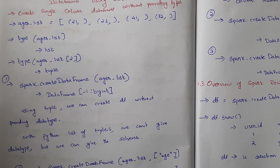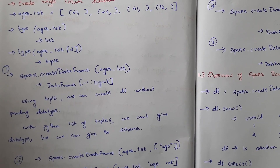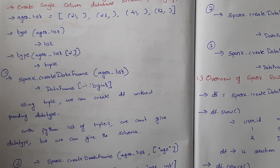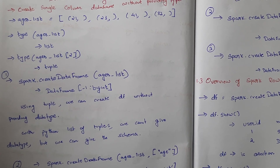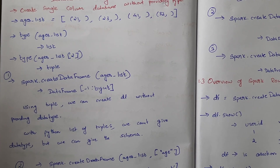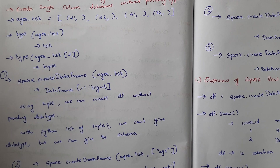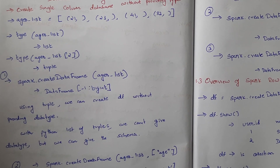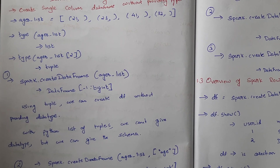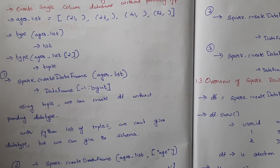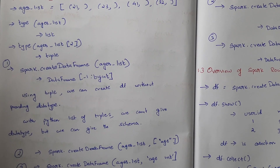The first approach is: spark.createDataFrame(ages_list), which will directly create a DataFrame without throwing an error. If you try to create a DataFrame from a plain list it will throw an error saying the data type is not defined, but in the case of a list of tuples we don't need to specify the data type — we can create a DataFrame without providing a data type.